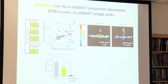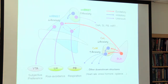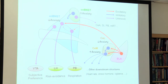Since BLA is the major source of excitation to the ADBNST, we asked what happens when we block BLA input to the ADBNST during EPM—would single units still distinguish open and closed arms? Strikingly, inhibition of BLA inputs decreased EPM scores in most units. One dramatic example: a unit that previously perfectly distinguished safe from anxiogenic environments lost this ability upon shutting off BLA inputs. The group data showed a significant decrease in EPM scores across all single units. It seems that inhibiting BLA input blocks incoming information about the environment.